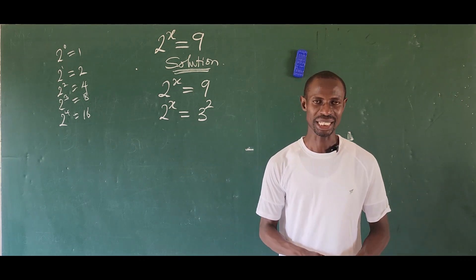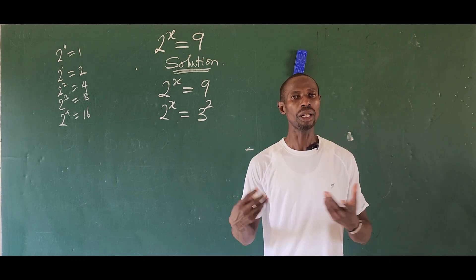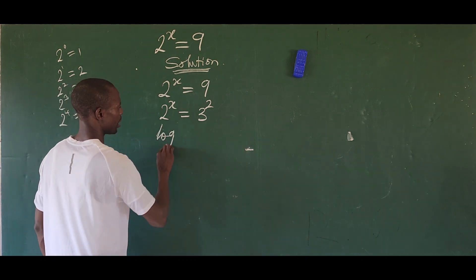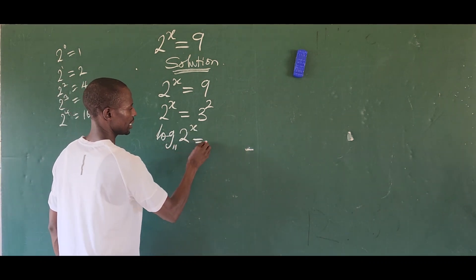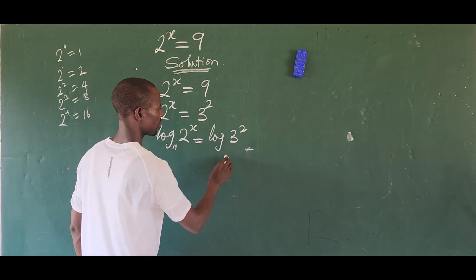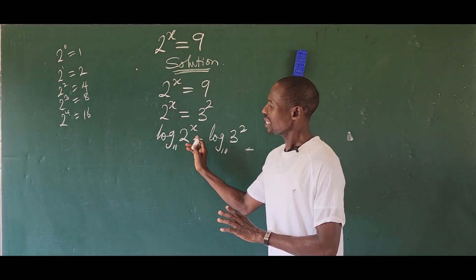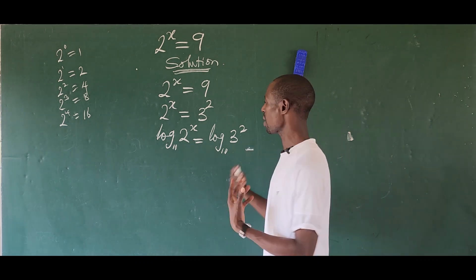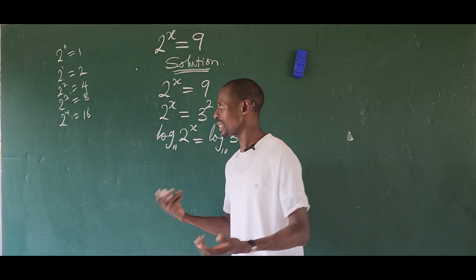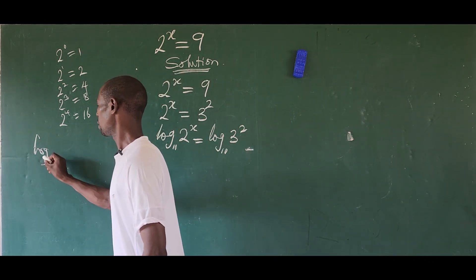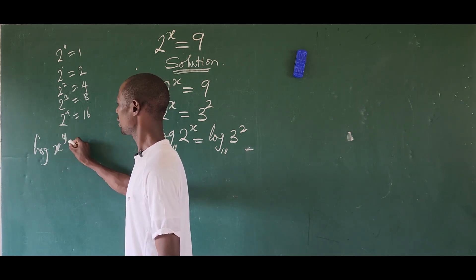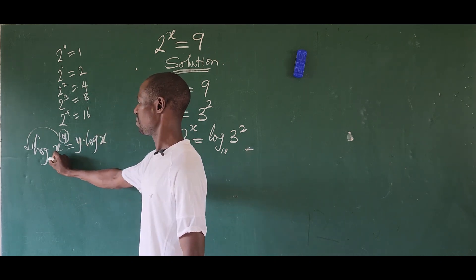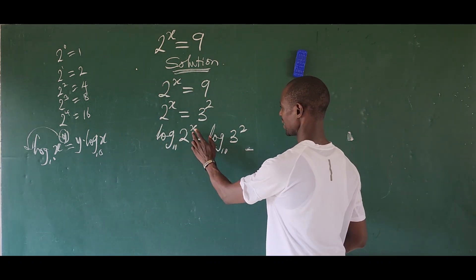We just have to log both sides of the equation. We can either take the natural log (base e) or log base 10. Let's take log base 10. Logging both sides gives us: log base 10 of (2 to the power of x) equal to log base 10 of (3 to the power of 2). We then apply the power law of logarithms, which says log of x to the power of y equals y times log x.